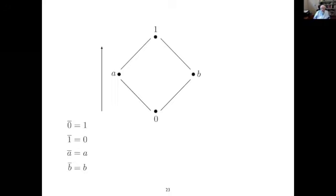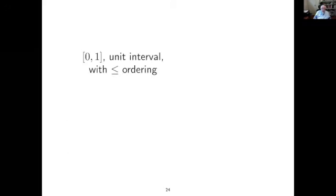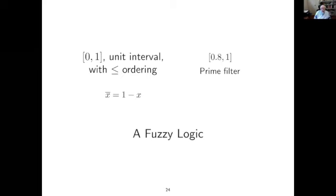This is the four-valued structure often used for first-degree entailment. The De Morgan involution just inverts things in the up-down direction. The prime filter usually used has A and B sometimes thought of as neither true nor false, and both true and false. There's also the unit interval with standard ordering — you have meet and join there, take your involution as reversing the ordering, and anything that's upward closed is going to be a prime filter. So you have these fuzzy logic examples, and there are loads of others.